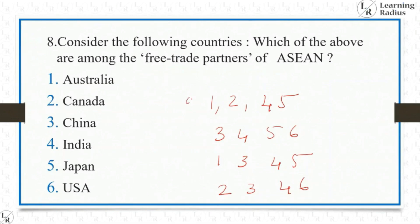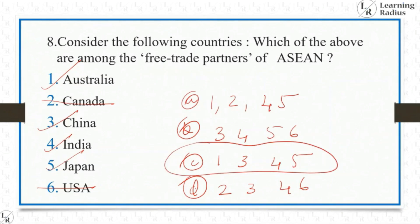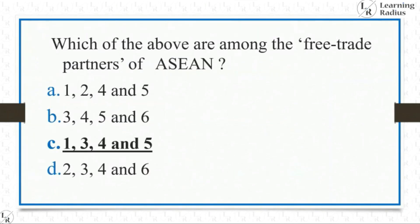Australia is a free trade partner of ASEAN — yes. Canada is not. China — yes. India — yes. Japan — yes. And the United States of America is not. So the answer is 1, 3, 4 and 5, meaning Australia, China, India, and Japan. The answer is option C. You had to read newspapers with clarity.